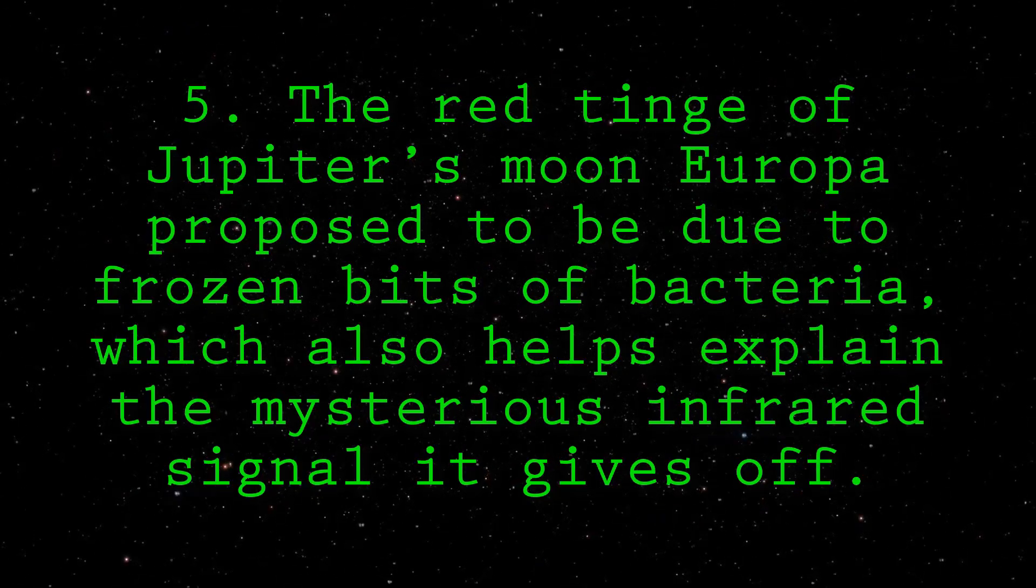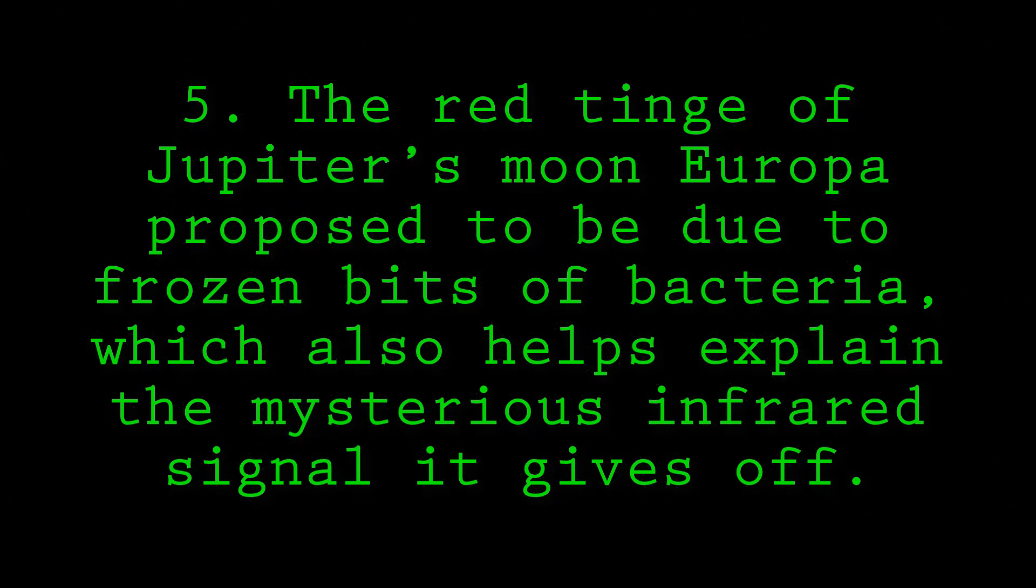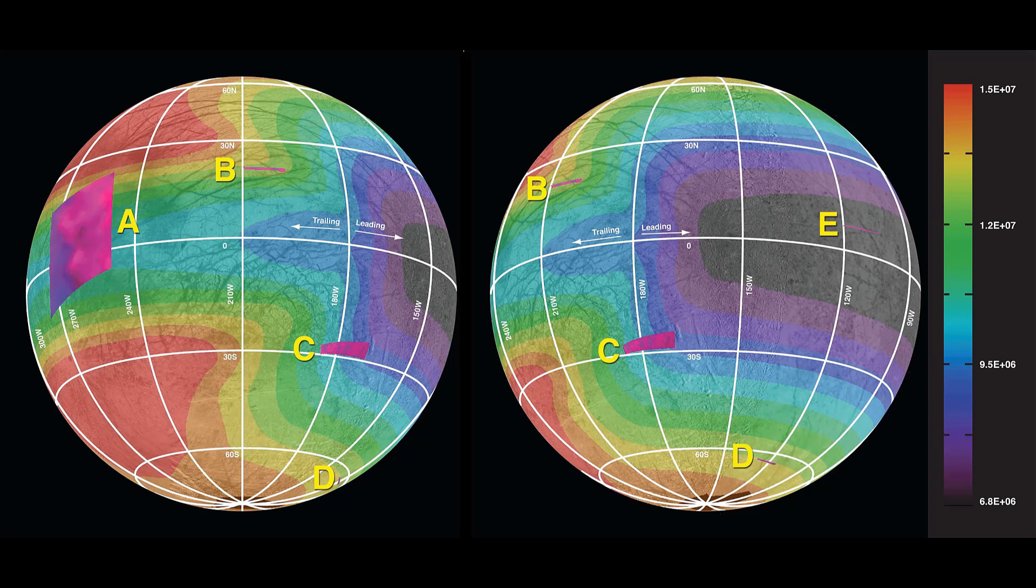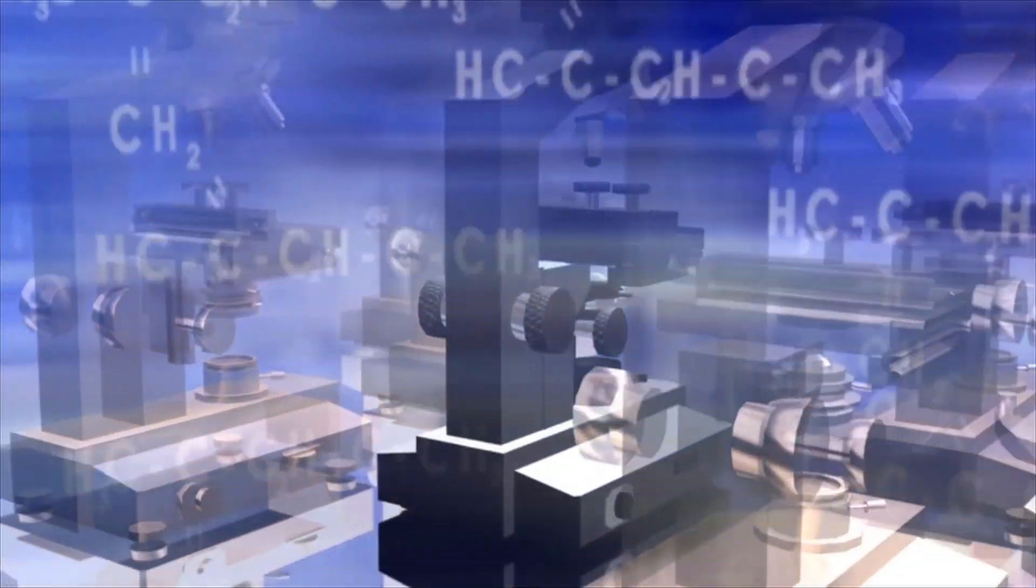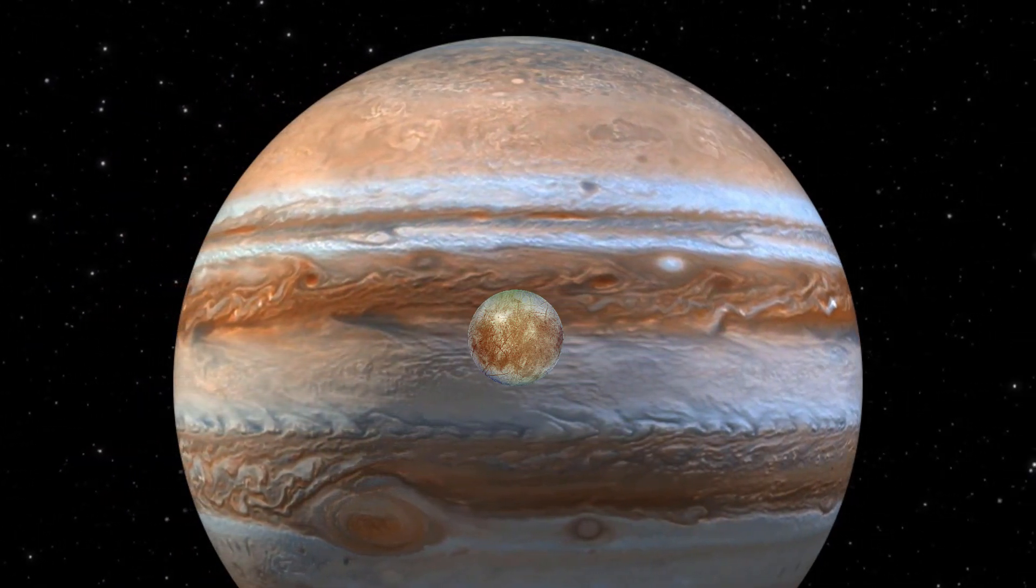Number 5. The red tinge of Jupiter's moon Europa, proposed to be due to frozen bits of bacteria, which also helps explain the mysterious infrared signal it gives off. Alien microbes might be behind Europa's red tinge, suggested NASA researchers in 2001. Though the surface is mostly ice, data shows it reflects infrared radiation in an odd manner. That suggests that something, magnesium salts perhaps, are binding it together. But no one has been able to come up with the right combination of compounds to make sense of the data. Intriguingly, the infrared spectra of some earthly bacteria, of those that thrive in extreme conditions, fits the data at least as well as magnesium salts. Plus, some are red and brown in color, perhaps explaining the moon's ruddy complexion.